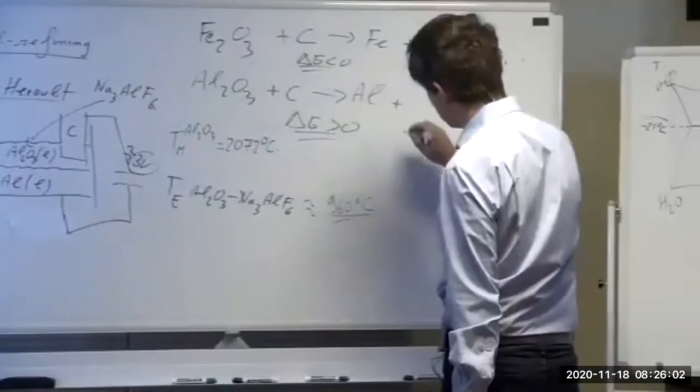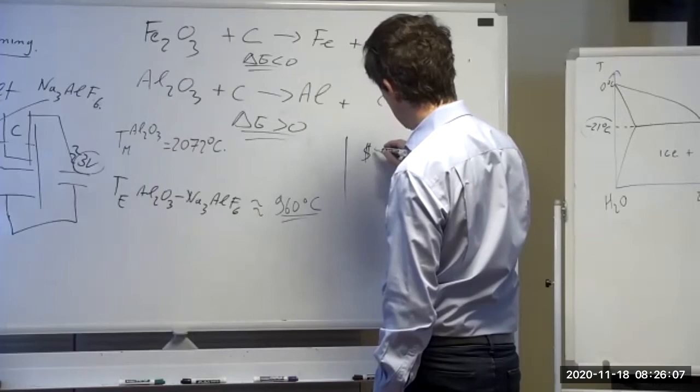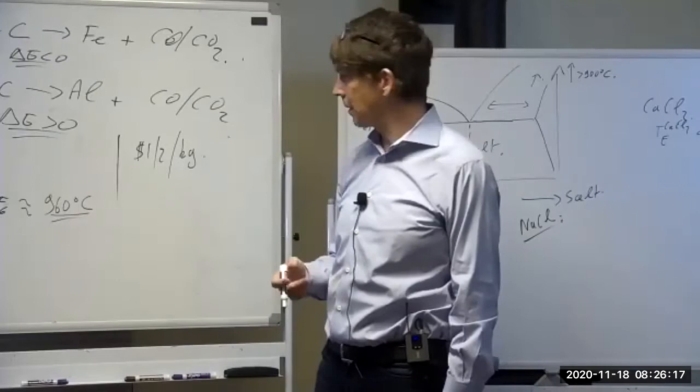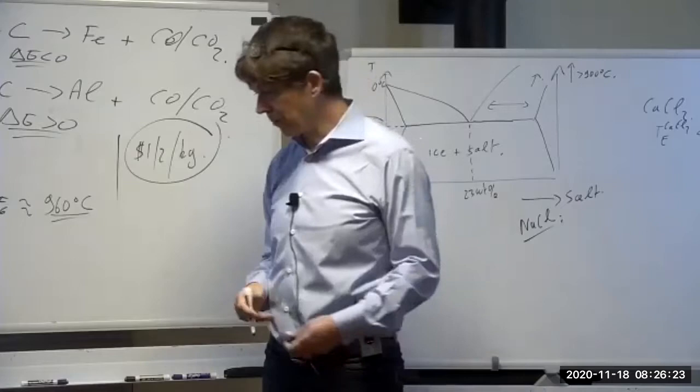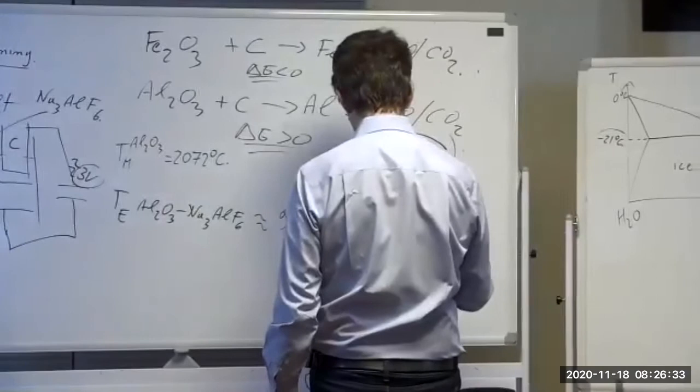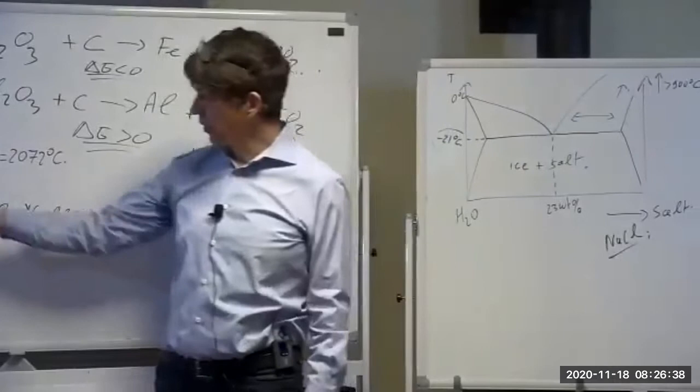Aluminum is a lot more expensive than iron, which is more like 10-20 cents per kilogram. The real question that has driven this field for the last 20 years is: why not titanium? If you invent the equivalent of the Hall-Héroult process for titanium, you'll be very rich — you can donate to the department and have a chair named after you.